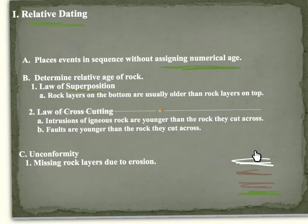The law of cross-cutting is where we have faults or igneous intrusions, meaning that they are younger than all the rocks that they cut across, because that means they came in last.